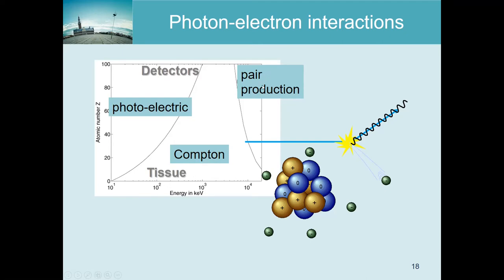Pair production is the opposite of annihilation. If a photon has more than 2 × 511 keV, it carries enough energy to create two particles each with a rest mass of 511 keV - it can turn into a positron and an electron. This never happens in nuclear medicine imaging, but it does occur in radiotherapy where they use radiation with that kind of energy, potentially creating positron-electron pairs.